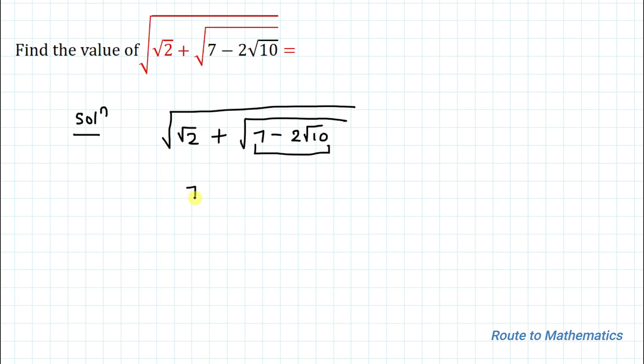We have here 7 minus 2 root 10. First step is to split this root. 7 remains the same, split this root first. That is root 10, we can write it as root 5 multiplied with root 2. The possible splitting of root 10 can be root 5 multiplied with root 2.